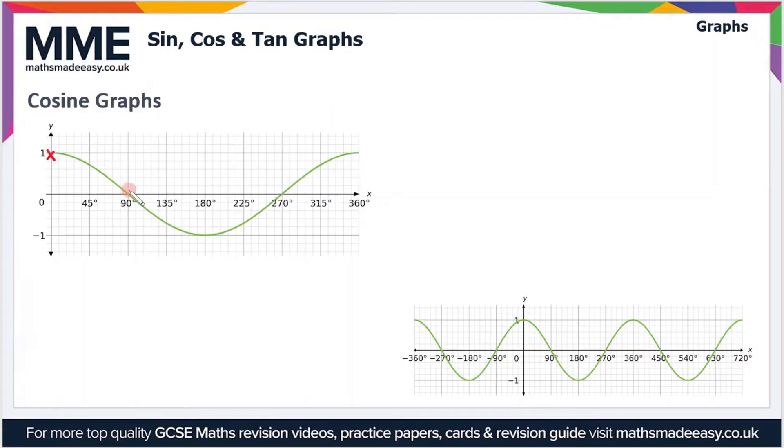Then as we go through to 90 degrees, the graph crosses the x-axis. It has a minimum point at 180, so that's a value of negative 1. Crosses the x-axis again at 270 and peaks again at 360 degrees. So again, you could continue this graph and it would look like this, as we have in this image below. Once again, the function is periodic.